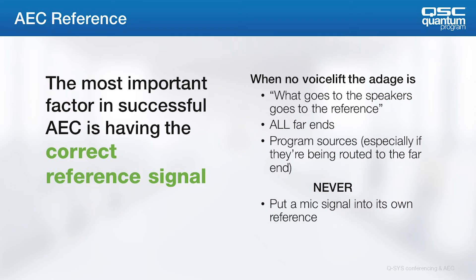The most important factor in having a functional conferencing system with AEC is composing a proper AEC reference. To recap, we're looking to tell the algorithm what signal it is we're trying to remove from the microphone being processed. In cases with no local reinforcement, the reference signal should be all far end signals and any program feeds. If we're not sending program sources to the far end directly, we don't want them to hear it passing through the microphones; and if we are, we don't want them to hear direct program feeds and a delayed version coming back through the conferencing mics. In short, as long as there's no voice lift in the room, the AEC reference signal should simply be the signal that's going to the room speakers. Notice we never put a microphone signal into its own reference, either directly or indirectly, as this results in a pumping, underwater-like sound that reaches the far end.